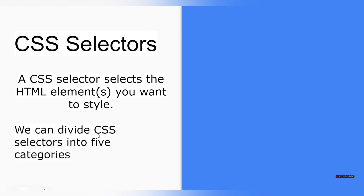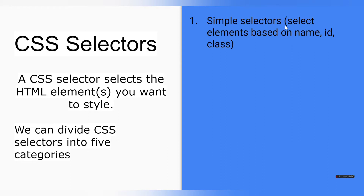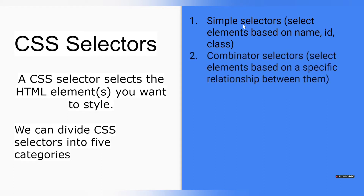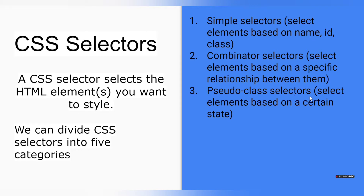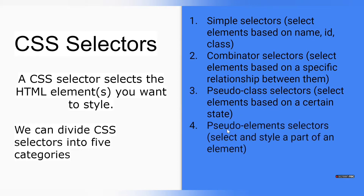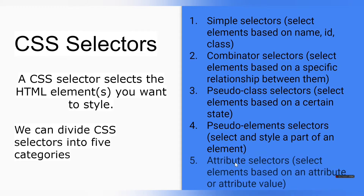We can divide CSS selectors into five categories. The first one is simple selectors, which select elements based on name, ID, or class. The second is combinator selectors, which select elements based on a specific relationship between them. The third is pseudo-class selectors, which select elements based on a certain state. The fourth is pseudo-element selectors, which select and style a part of a particular element. The fifth is attribute selectors, which select elements based on an attribute or attribute value.